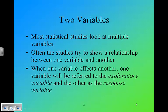Correlation deals with two variables. Most of the time when we're talking about statistical studies, we're talking about multiple variables. Often what you're studying is looking to see a relationship between one variable and another. When one variable affects another, that variable will be referred to as the explanatory variable. The other is called the response variable.